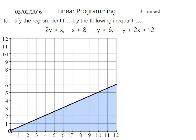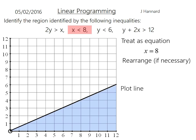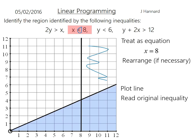Next, think about x is less than 8. Treat it as an equation, forget the inequality, so it's x equals 8. That is just a line that goes straight up through 8. Then ask ourselves: do we want to be above or below? Really, this inequality on a vertical line is just telling you it wants to be to the left, so we shade to the right. We want less than 8, so we shade the other side.